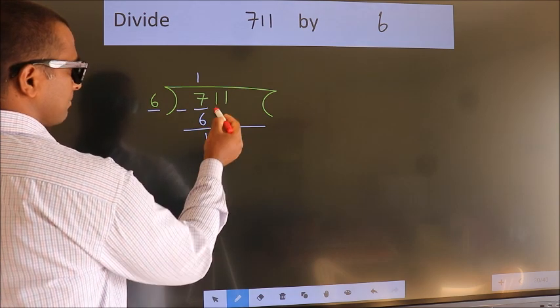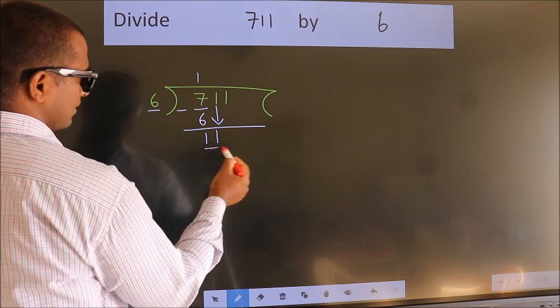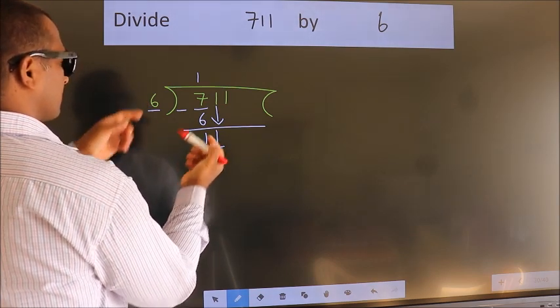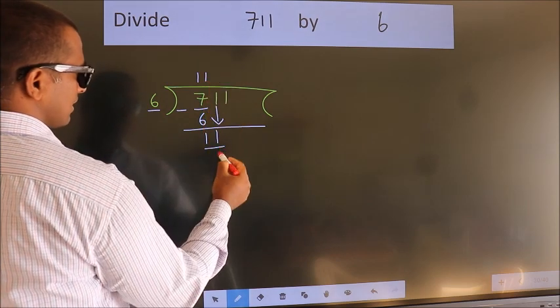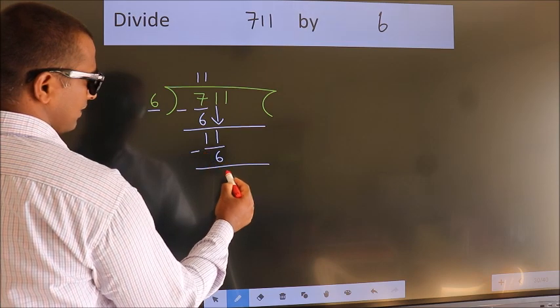After this, bring down the beside number. So, 1 down. So, 11. A number close to 11 in 6 table is 6 times 1 is 6. Now we subtract. We get 5.